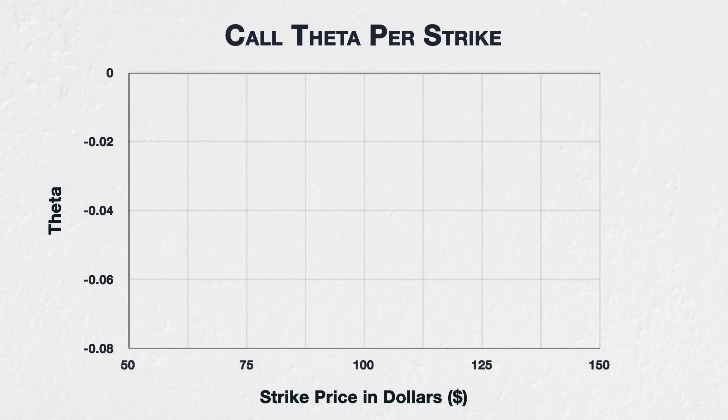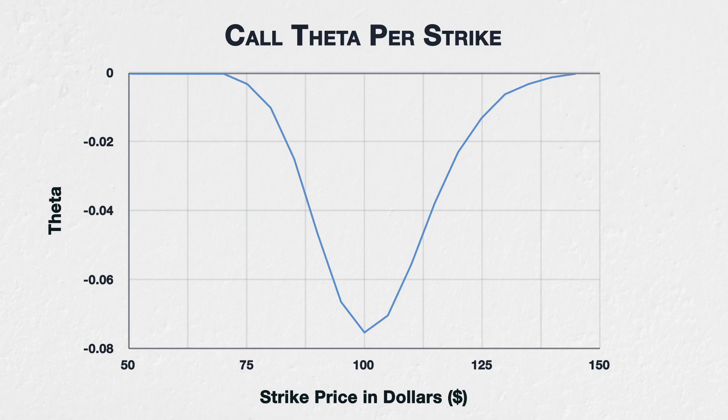As mentioned in the previous lecture, the theta of an option is not static. One variable that has a major influence on theta is the underlying asset price and where it currently is relative to the strike price of each option. Let's take a look at multiple options that share the same underlying asset price, days to expiry, and implied volatility — the only difference being the strike price. This chart shows the theta for all options of a fictional asset with a current price of $100, 30 days to expiry, and implied volatility of 40%. The strikes range from $50 to $150.